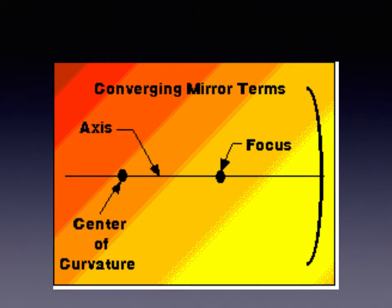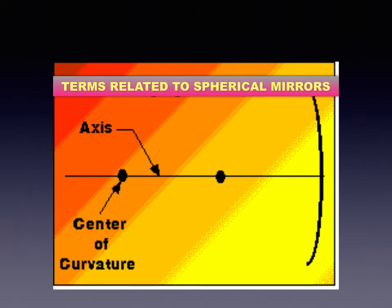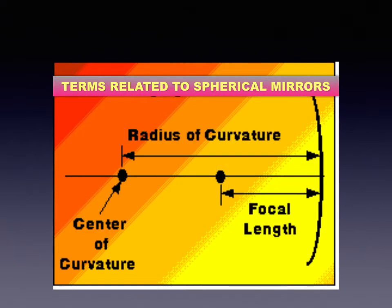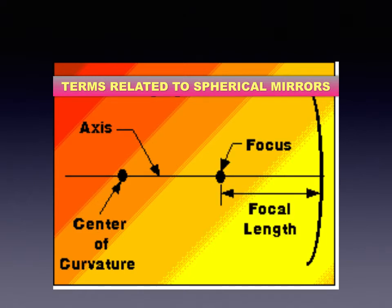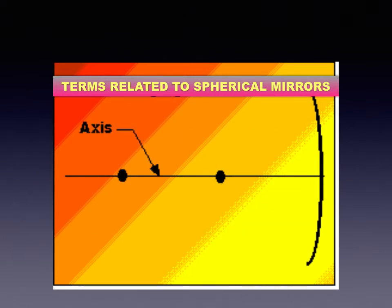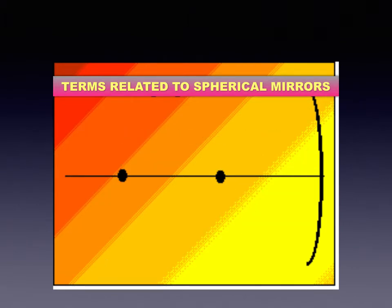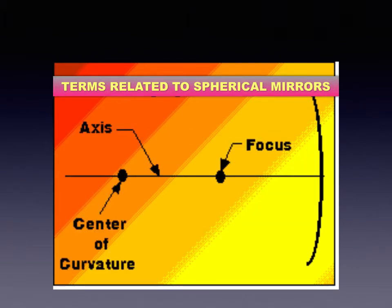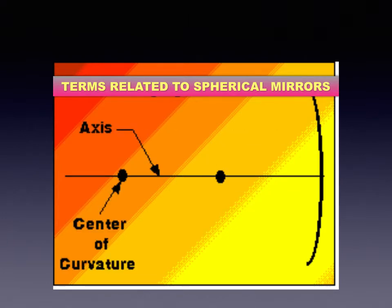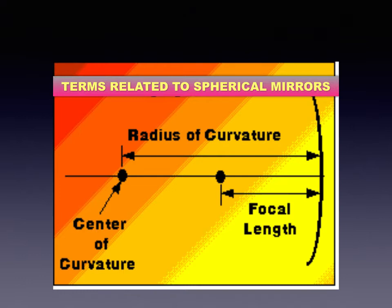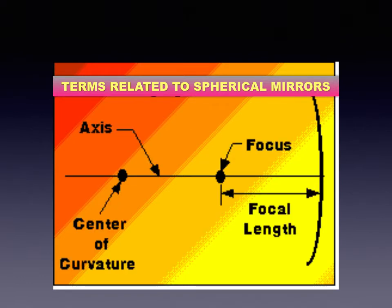Now we shall see a few terms related to spherical mirrors. Pole: the center of the mirror surface is called its pole. Center of curvature: the center of the sphere of which the mirror is a part is called the center of curvature of the mirror. Radius of curvature: the radius of the sphere of which the mirror is a part is called the radius of curvature of the mirror.